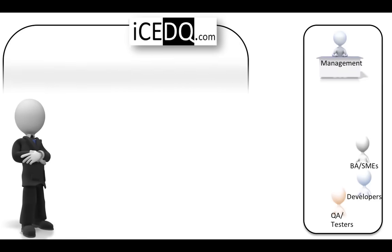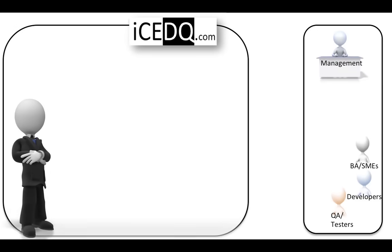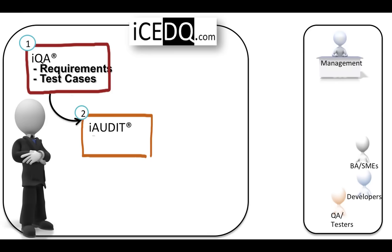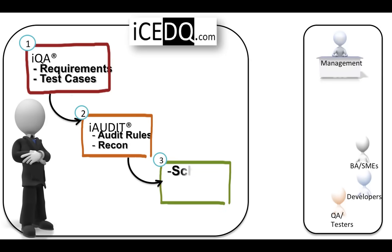The IceDQ platform works together to provide a complete data testing solution. It's a three-step process: first, write requirements and test cases, or if you already have them, skip this step and go directly to the rules engine. Second, create rules to audit data. Third, schedule or execute the rules.